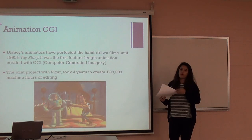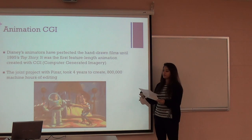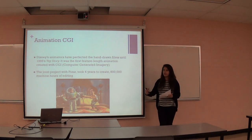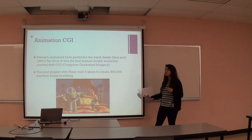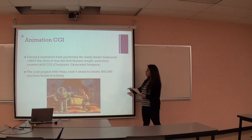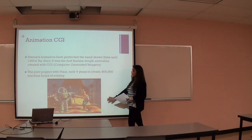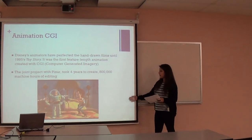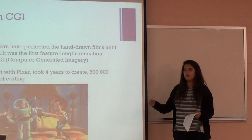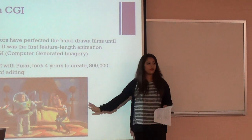That brings us to what we currently use, which is CGI — computer generated imagery. Up until Toy Story, Disney had perfected their hand-drawn movies. As we saw with Snow White and the films after, they were all hand-drawn until Disney joined with Pixar to create Toy Story. This took four years to make, and they had to pay attention to a lot more detail, working out how actors' voices and performances would shape how the characters were created.